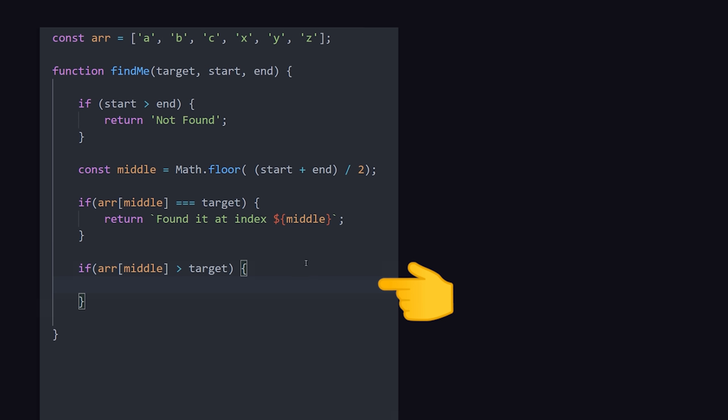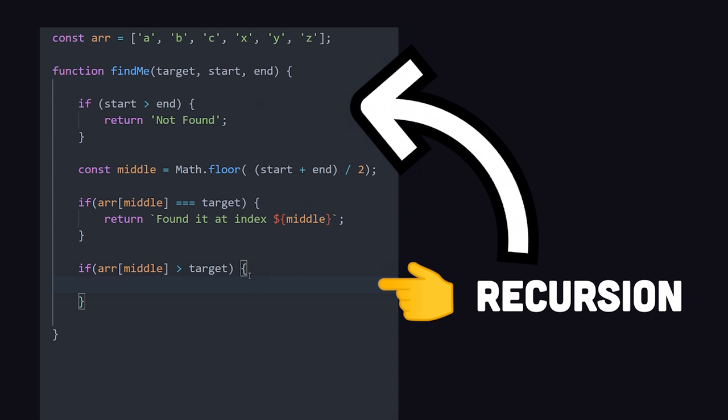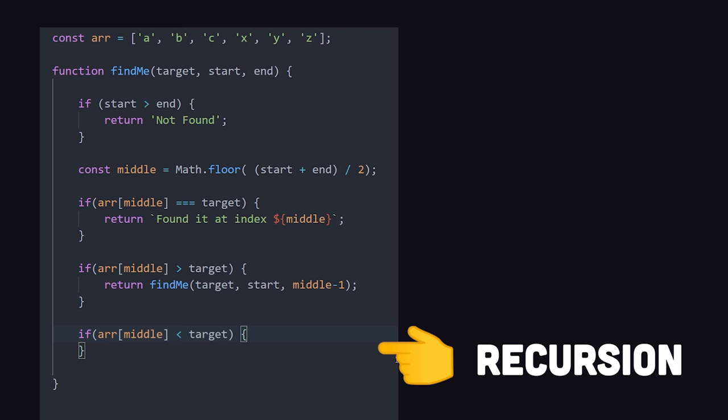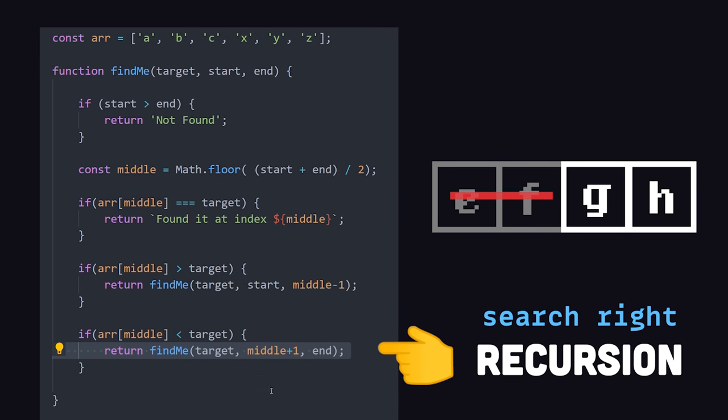Otherwise, we need to continue searching, and that's where recursion comes into play. If the middle value is greater than the target, then we'll call the same function, but this time, we'll put the ending index at the middle. The other possibility is that the middle value is less than the target. In which case, we can also recurse, but this time, we'll put the starting index in the middle.